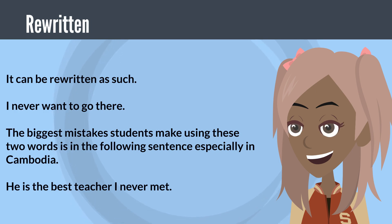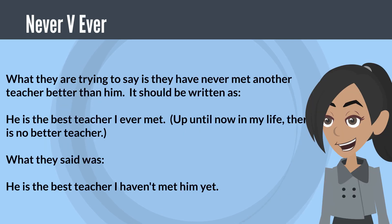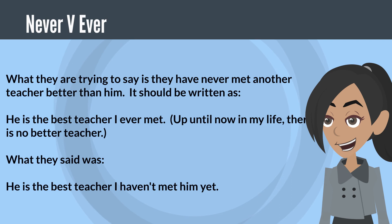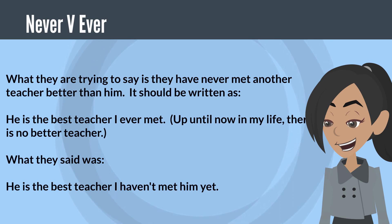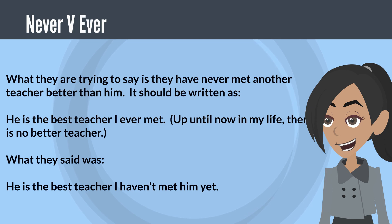The biggest mistake students make using these two words is in the following sentence, especially in Cambodia: He is the best teacher I never met. What they are trying to say is they have never met another teacher better than him. It should be written as: He is the best teacher I ever met — meaning up until now in my life, there is no better teacher. What they actually said was: He is the best teacher I haven't met him yet.